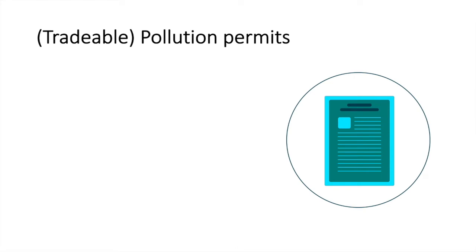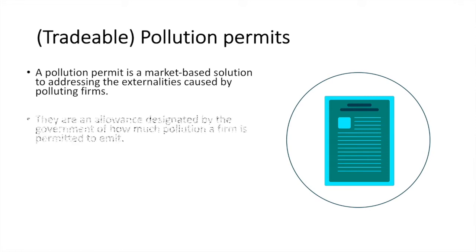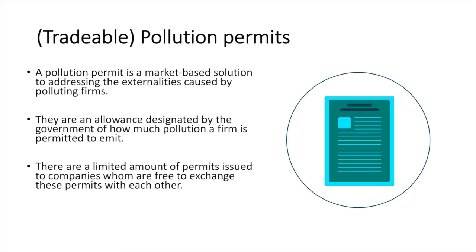This policy has a few different names, but they essentially mean the same thing. Tradable pollution permits or cap-and-trade schemes are a market-based solution to address the externalities caused by polluting firms. They are an allowance designated by the government of how much pollution a firm is permitted to emit. There are a limited amount of permits issued to companies who are free to exchange these permits with each other. Firms will be fined if they exceed the amount.